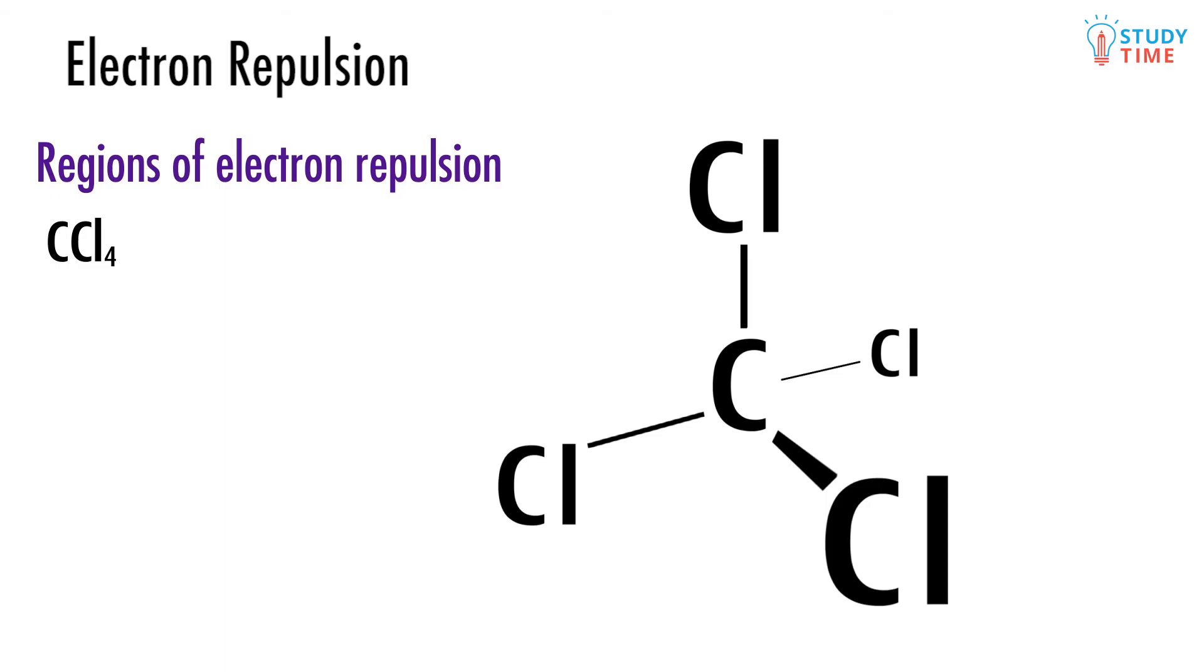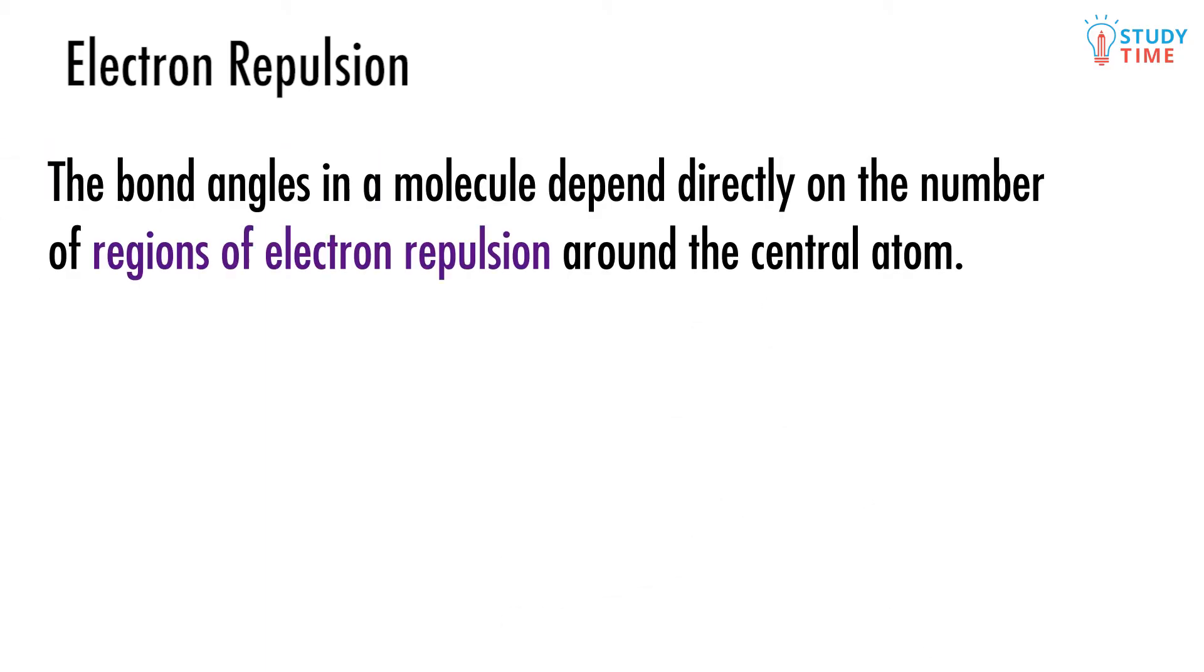What we've just given you is an introduction to how the shapes of different molecules get determined. What you should now know is the bond angles in a molecule depend directly on the number of regions of electron repulsion around the central atom. However, the story, sadly for you and us, is more complicated than that.